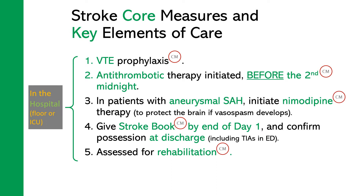Stroke core measures and key elements of care in the hospital: all patients with stroke should be given VTE prophylaxis. Also, all patients with stroke should be initiated on antiplatelet therapy before the second midnight. For example, if the patient is admitted at 23:59 hours one night, at the tick of the second midnight — that is 24 hours and one minute after admission — will be the second midnight.